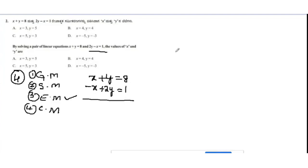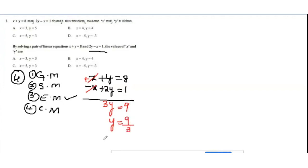Adding the two equations to eliminate x: +x and −x cancel. y + 2y = 3y, and 8 + 1 = 9. So 3y = 9.